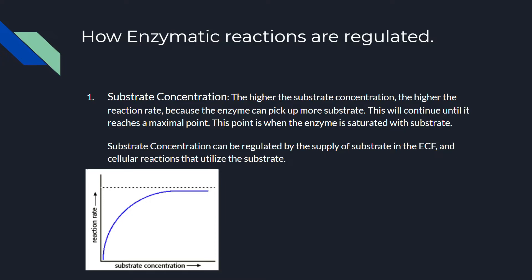Now we'll talk about how enzymatic reactions are regulated. First, we'll look at changing the substrate concentration. The higher the substrate concentration, the higher the reaction rate — the enzyme will pick up more substrate. This will continue until we reach a maximal point where the enzyme can't pick up any more, called maximum saturation. Substrate concentration can be regulated by the supply of substrate in the extracellular fluid and the cellular reactions that utilize it.